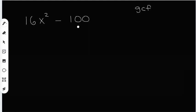What do these two terms have in common? 16x squared and 100. You can divide them both by 4. So I can take out a 4 from everything, from this term and this term.